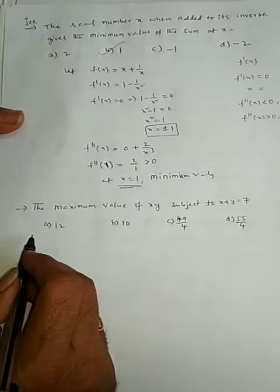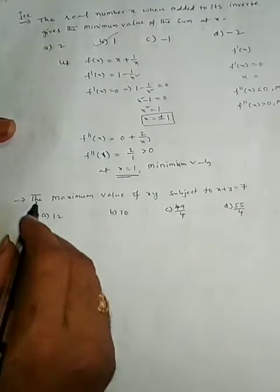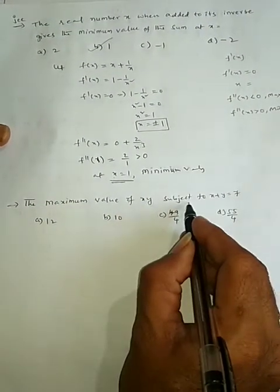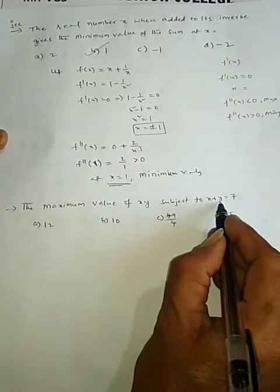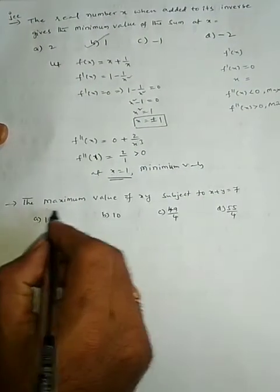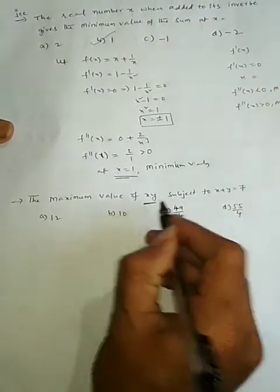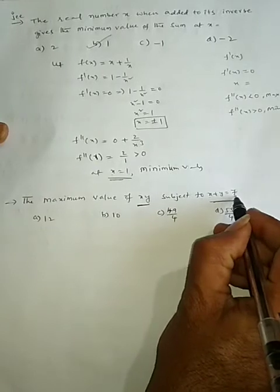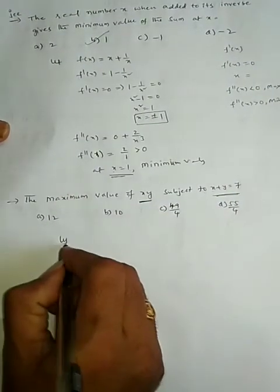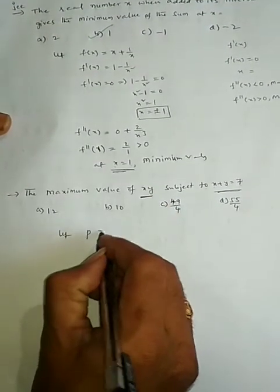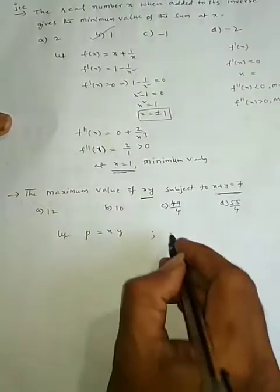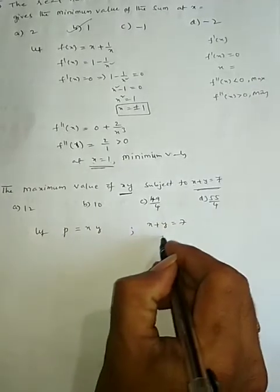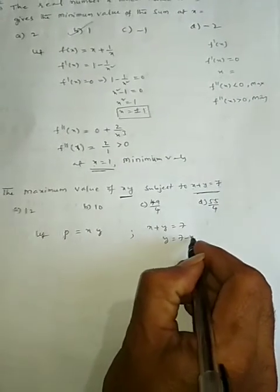The maximum value of x·y subject to x plus y is equal to 7. You are asked to find the maxima value of x·y. Based on that, let p equal to x·y. From the constraint x plus y equals 7, we get y is equal to 7 minus x.